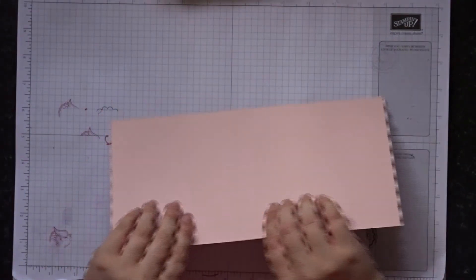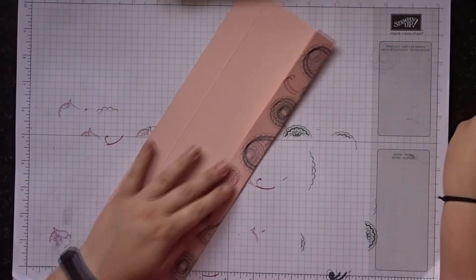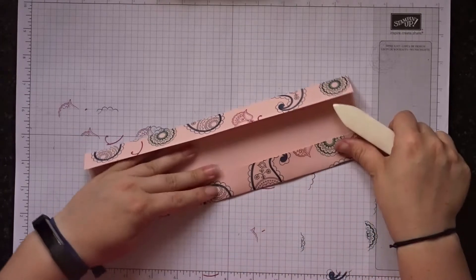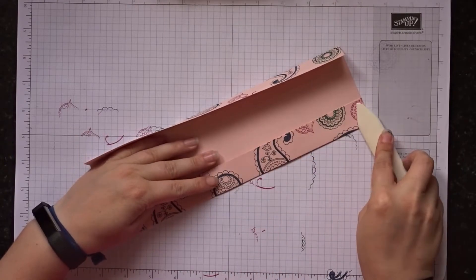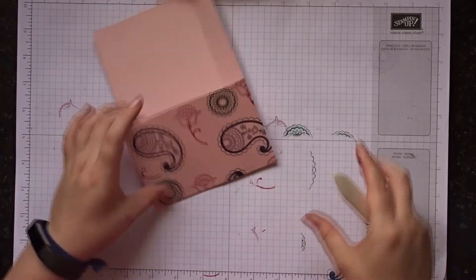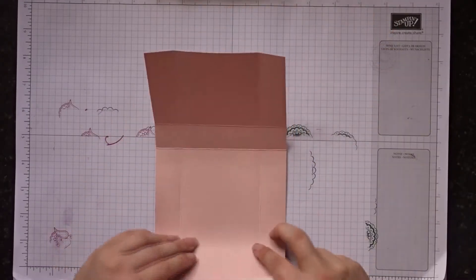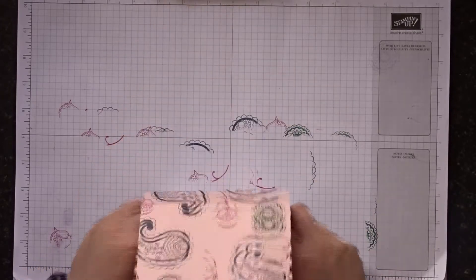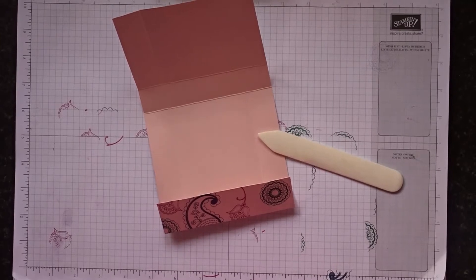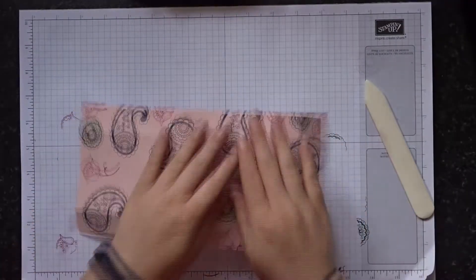And then we need to do some folding and burnishing. And then my battery is about to die so I'm just going to go and change it. So I've folded and burnished all of my score lines.